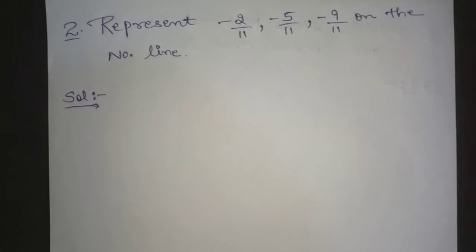Hello students, welcome to our channel. The second question is: represent minus 2 by 11, minus 5 by 11, and minus 9 by 11 on the number line. So you have three rational numbers and you have to arrange them on the number line.